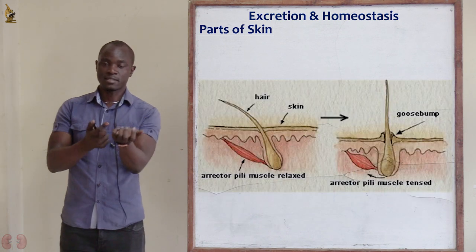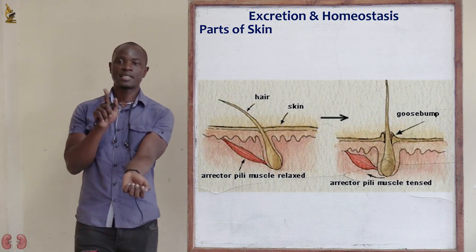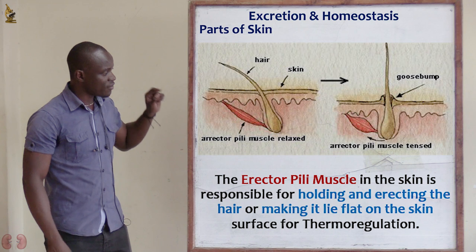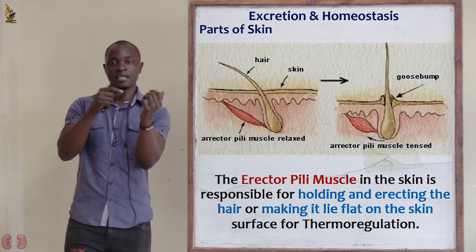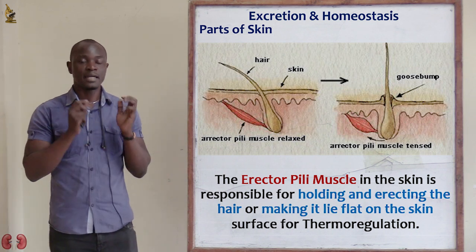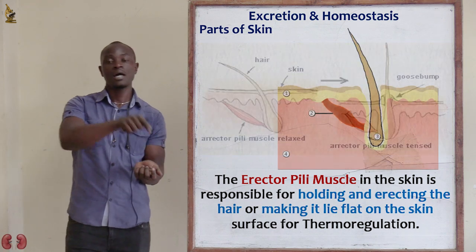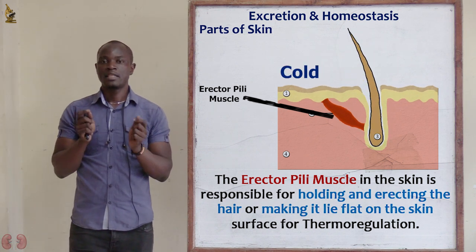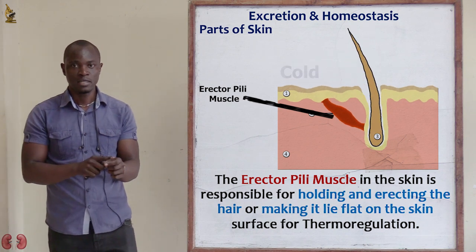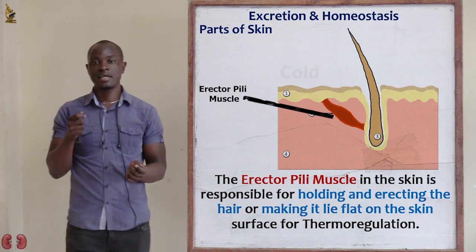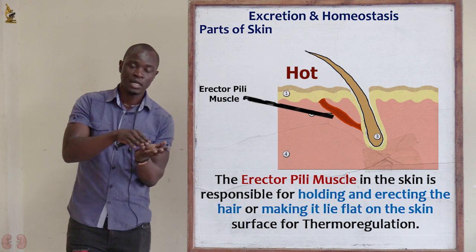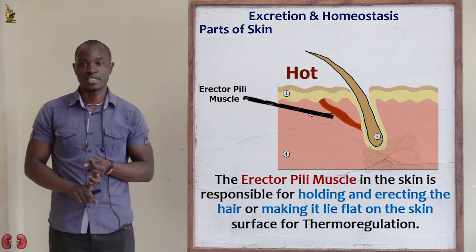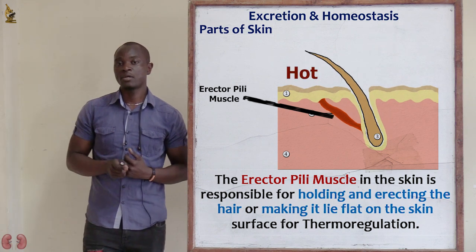How is it possible for hairs to erect or lie flat on the skin? This is where we introduce the erector pili muscles, which are attached to the hair and also to the dermis. When the erector pili muscle contracts, it pulls the hair upright. When it relaxes, the hair lies flat on the skin. This muscle constantly undergoes contraction and relaxation to alter the position of the hair depending on the environmental condition.